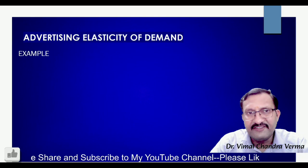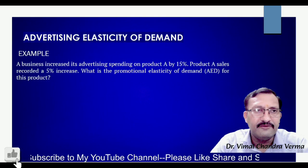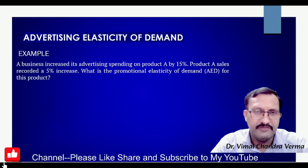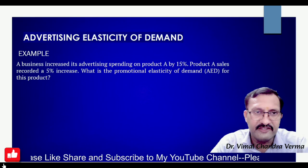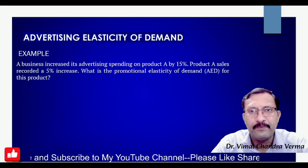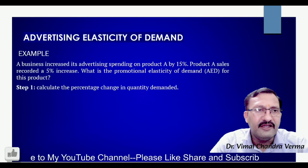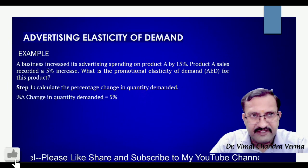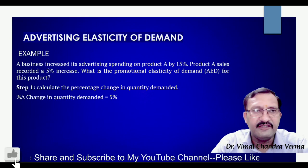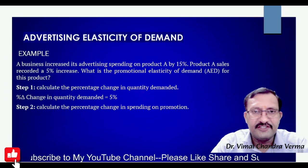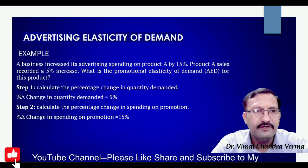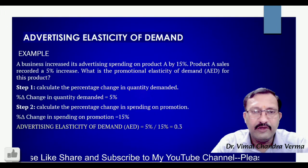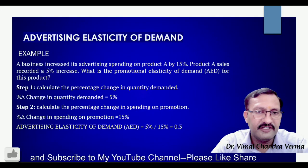Let us understand advertising elasticity of demand with this example. A business increased its advertising spending on product A by 15%, and product A sales recorded a 5% increase. The percentage change in quantity demanded is 5%, and the percentage change in spending on promotion is 15%. So advertising elasticity of demand equals 5% divided by 15%, which equals 0.3.